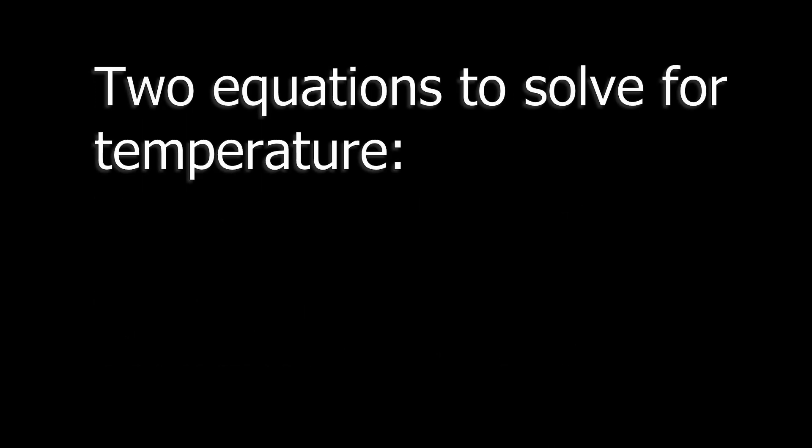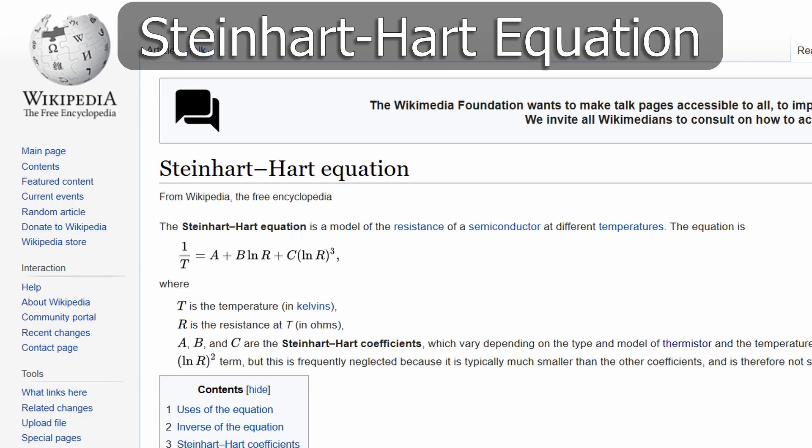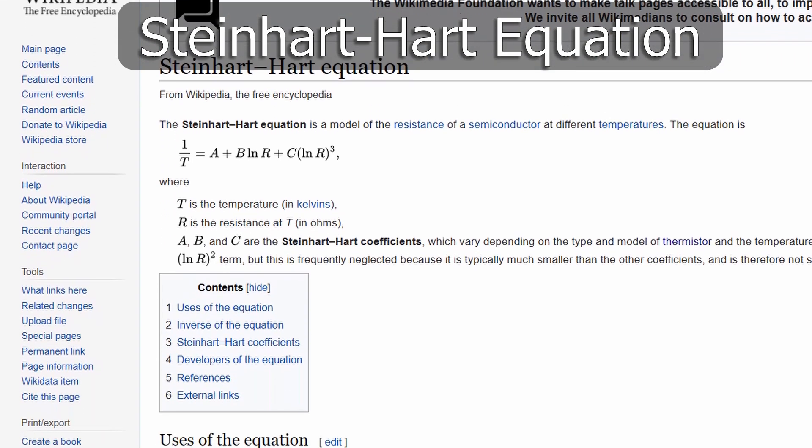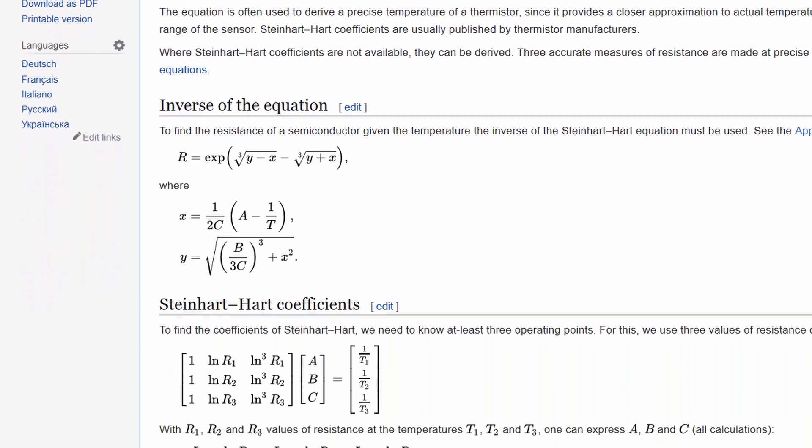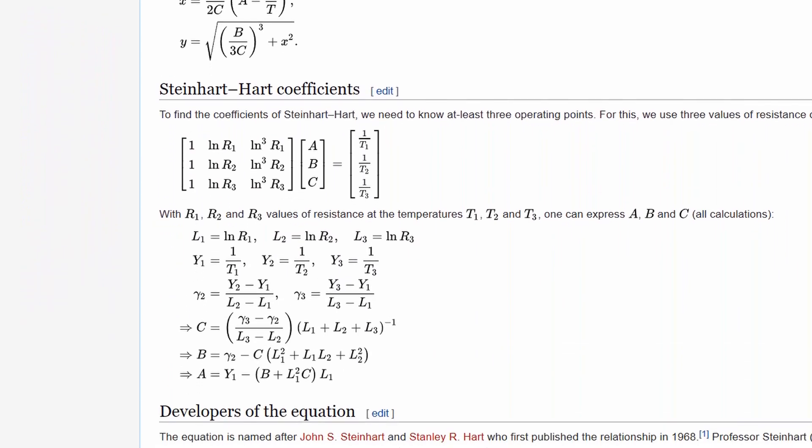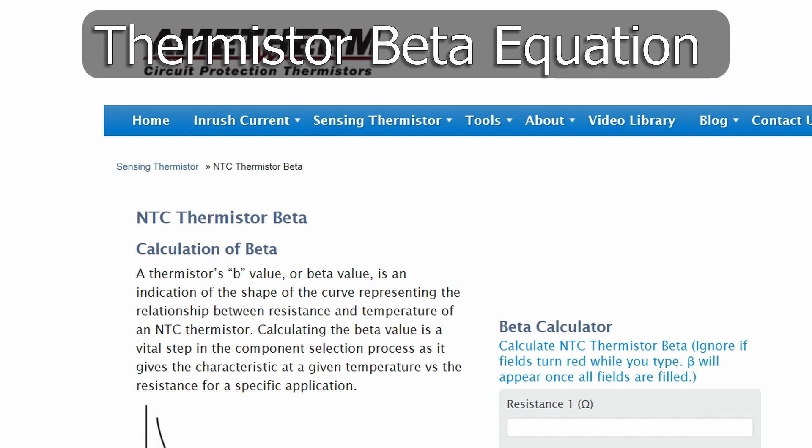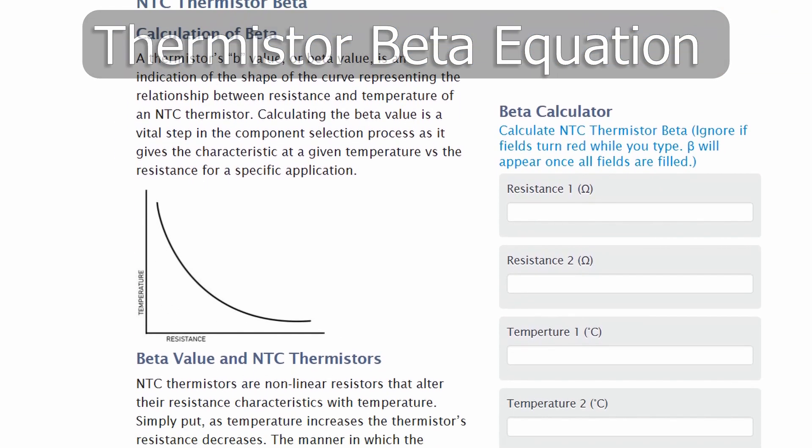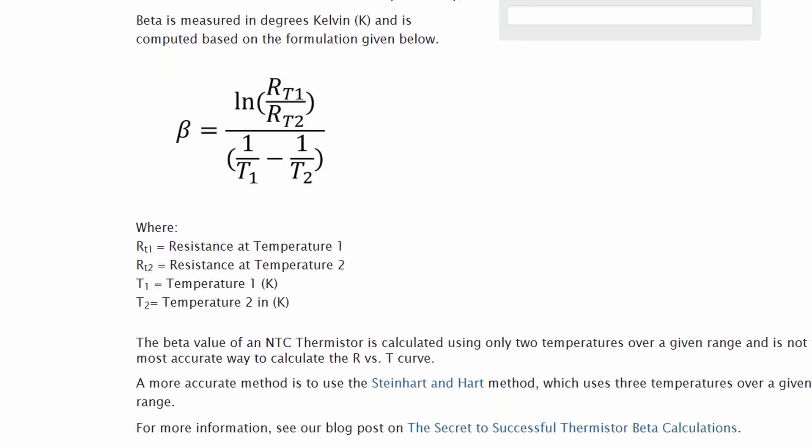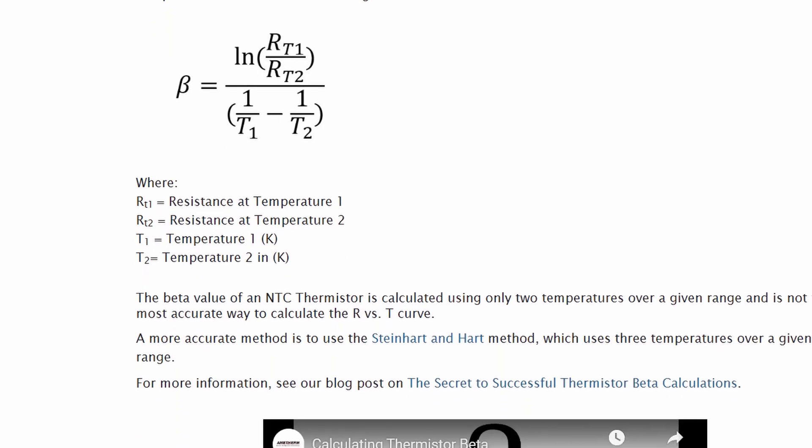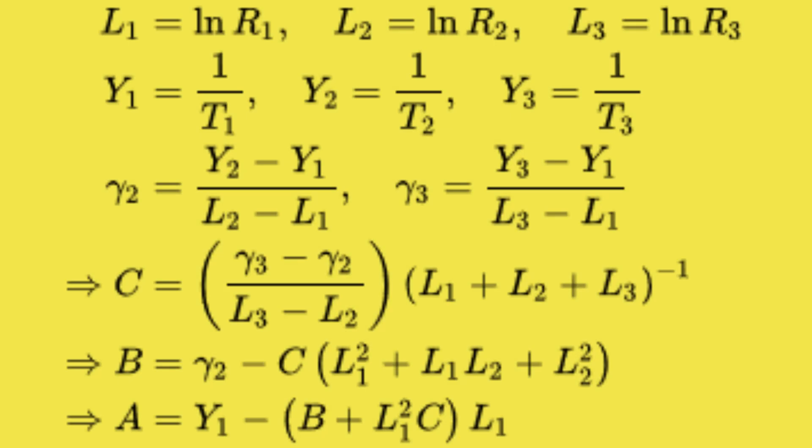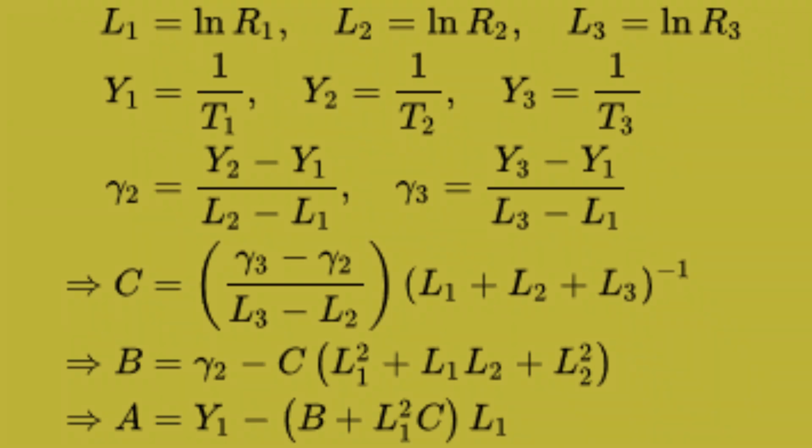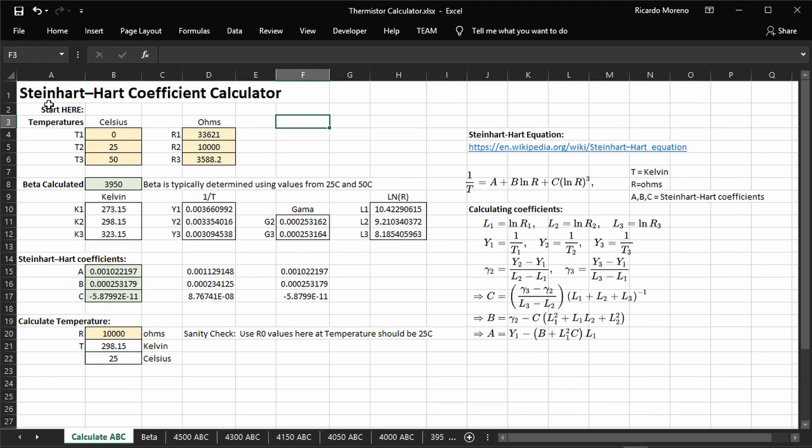There are two approaches to calculating temperature. First, there's the more accurate Steinhardt-Hart equation where we need to calculate the Steinhardt-Hart coefficients a, b, and c. Then there's the beta approximation that uses the beta value and approximates the temperature value based on a single temperature reference value. You can easily find information on the web about the Steinhardt-Hart equation and some additional equations to calculate the ABC coefficients. And here's a spreadsheet I made to calculate these values.